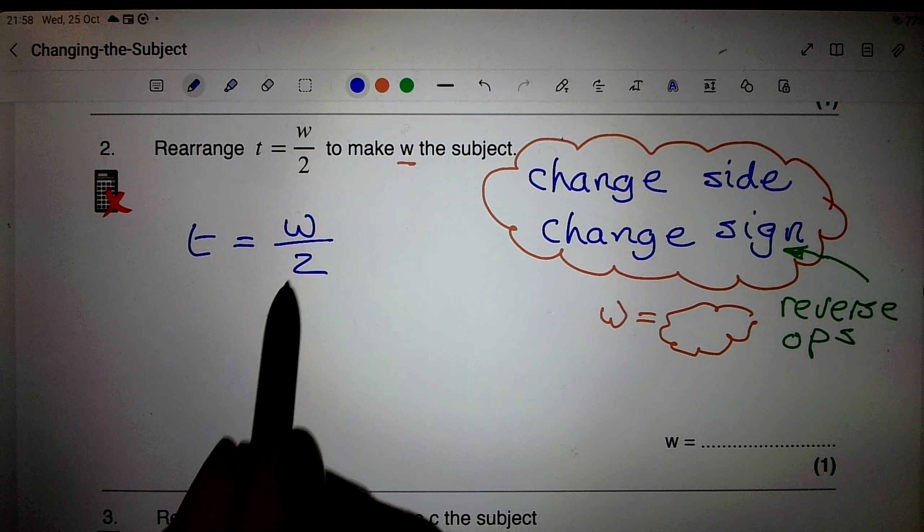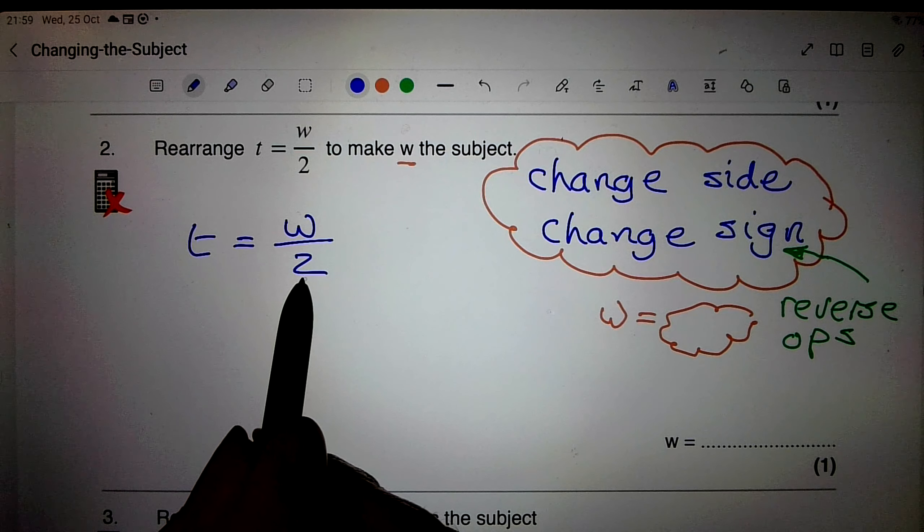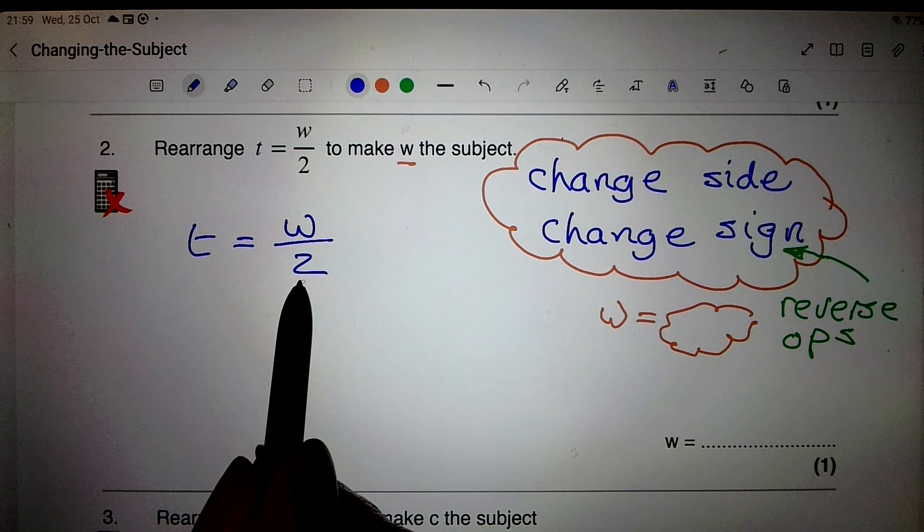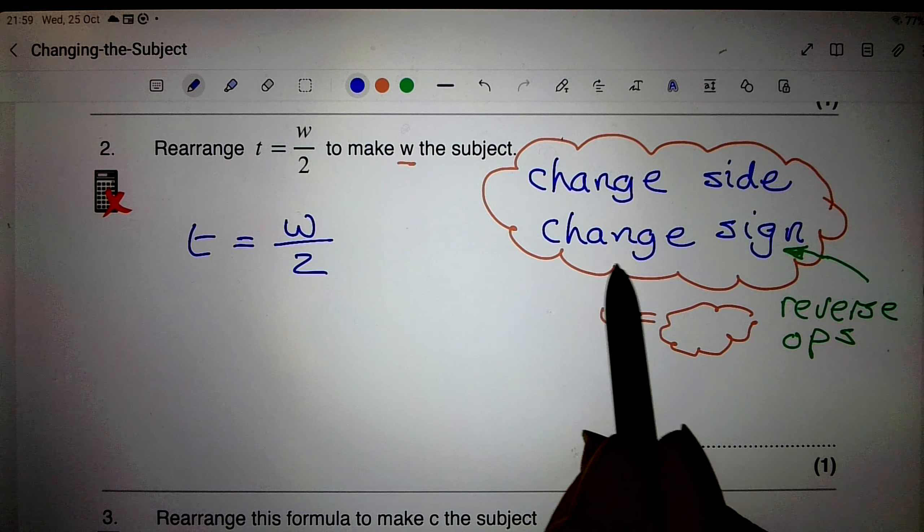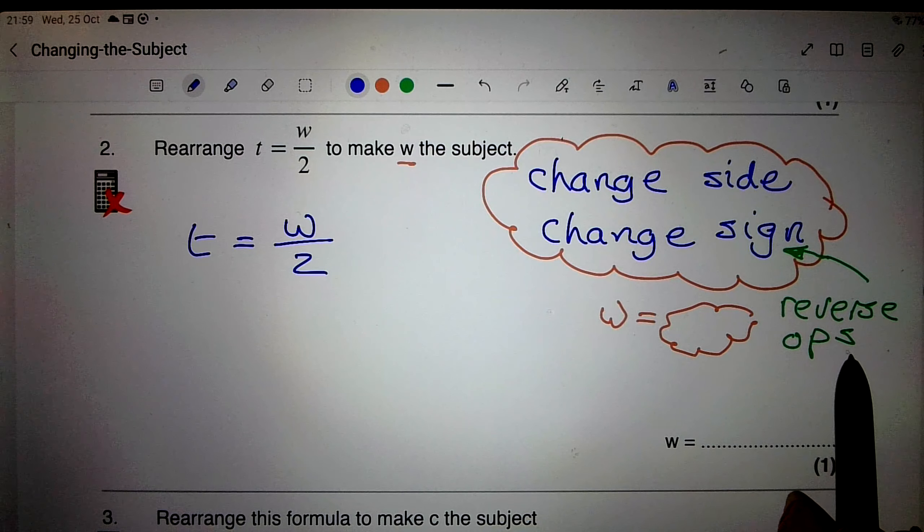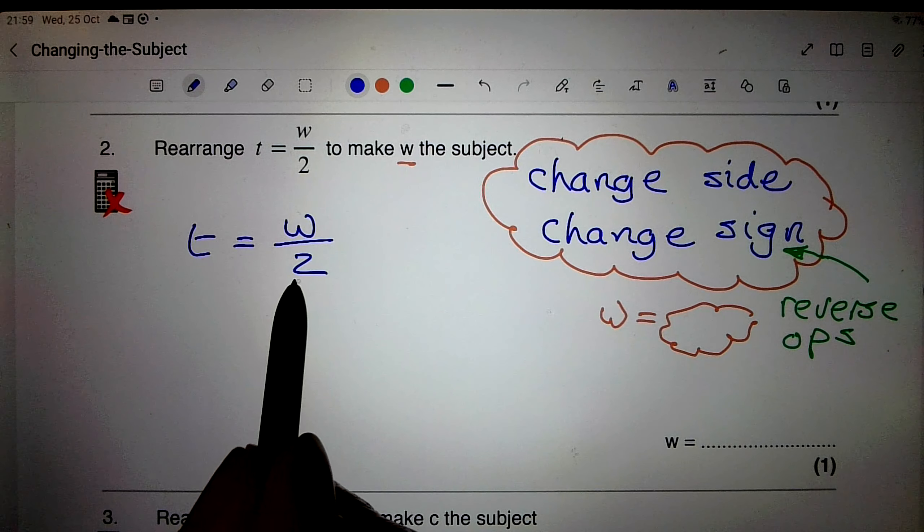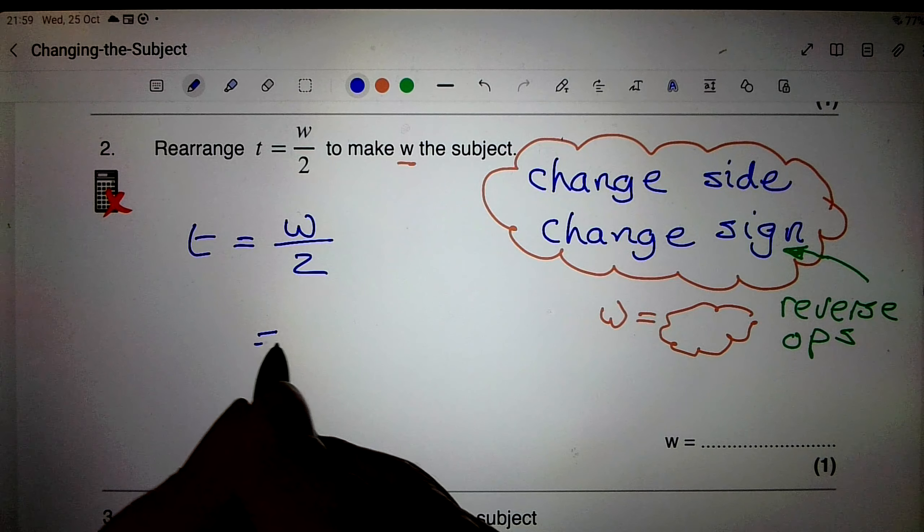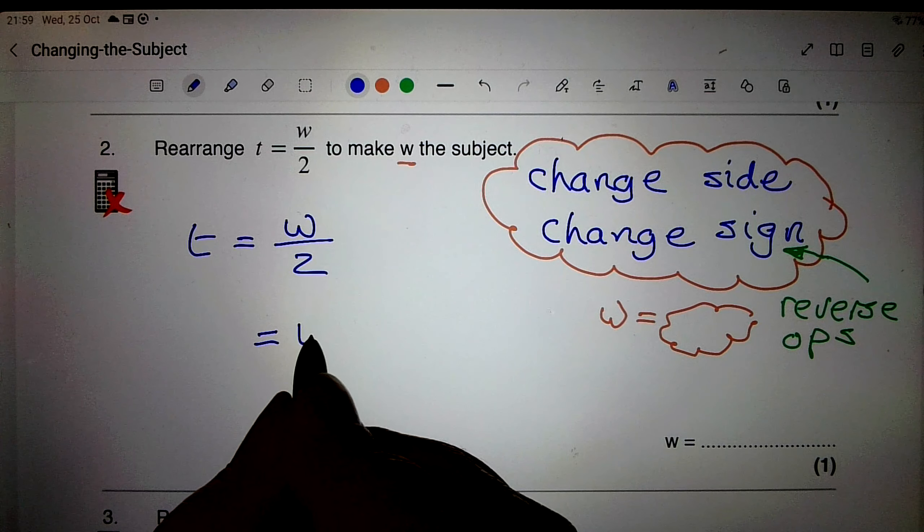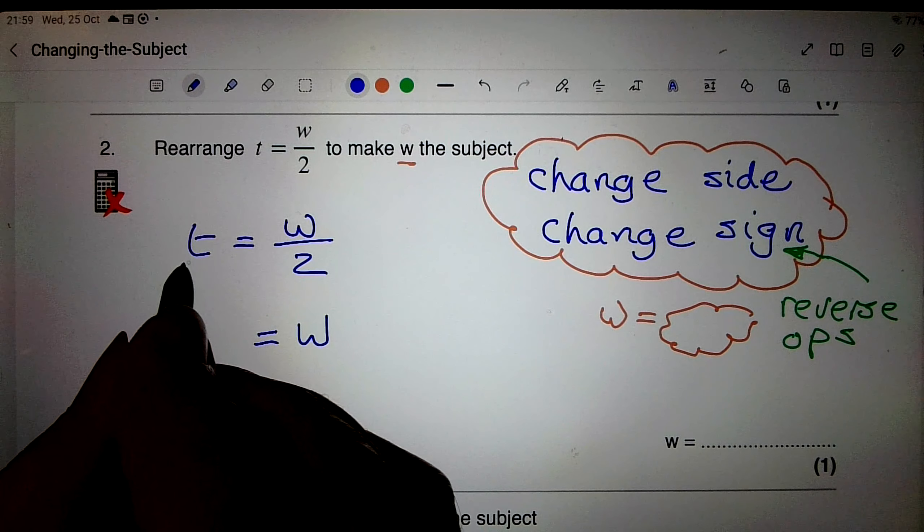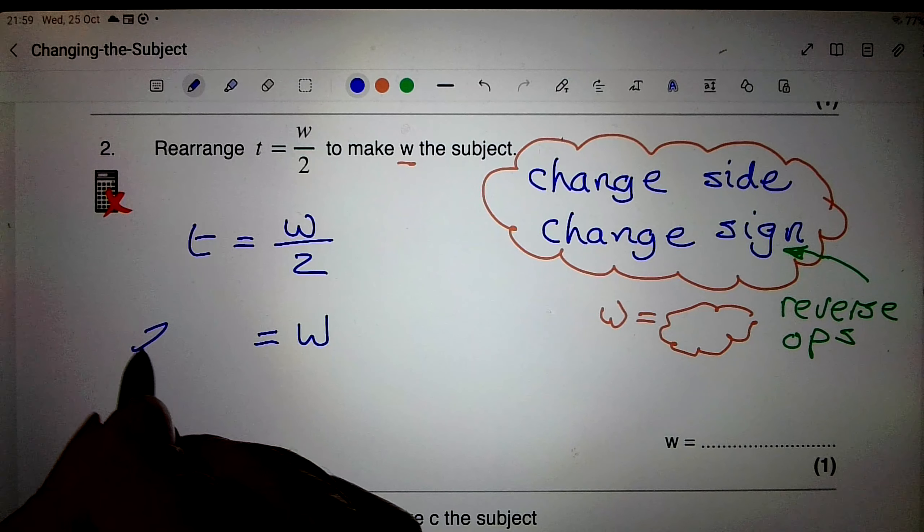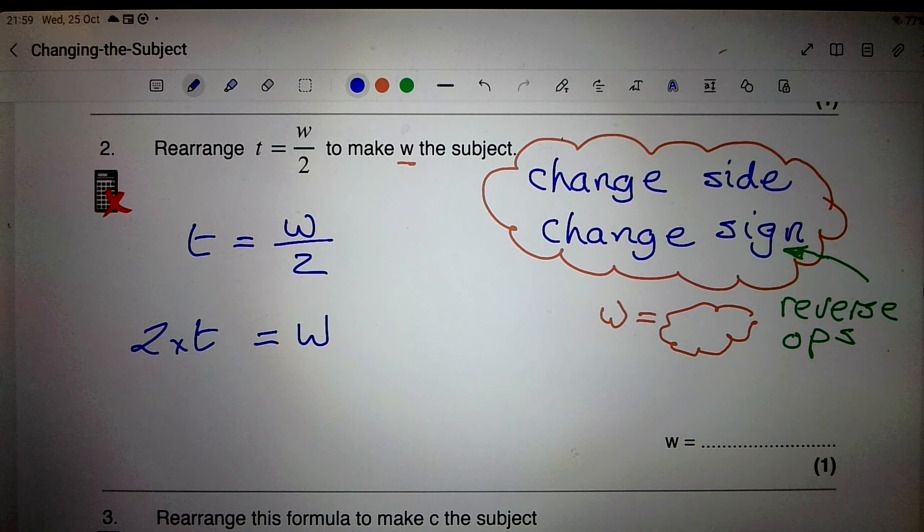Now I don't want this 2, but I want the w by itself. So I'm going to change the side. Now the 2 is dividing, so when I change this sign, I use reverse operations. Reverse operation of divide is of course multiply. So I'm going to finish up with w by itself, and on the left hand side here I'm going to have 2 times t.